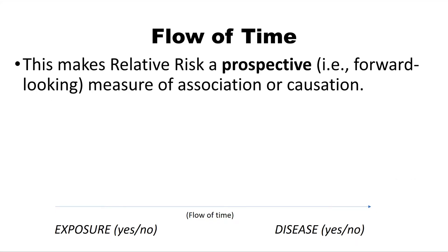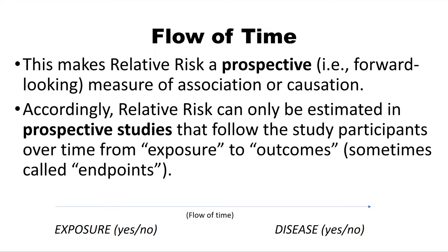This makes relative risk a prospective, that is forward-looking, measure of association or causation. Accordingly, relative risk can only be estimated in prospective studies that follow the study participants over time, from exposure to outcomes, which are sometimes called endpoints.